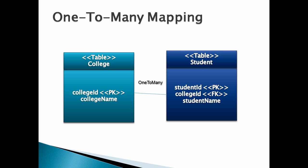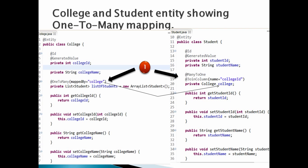Let's create entities by the name College and Student. In order to know more about entities, please watch my previous videos on JPA. The college entity has a reference to a list of students, as a college can have many students, and the student entity has a reference to college.